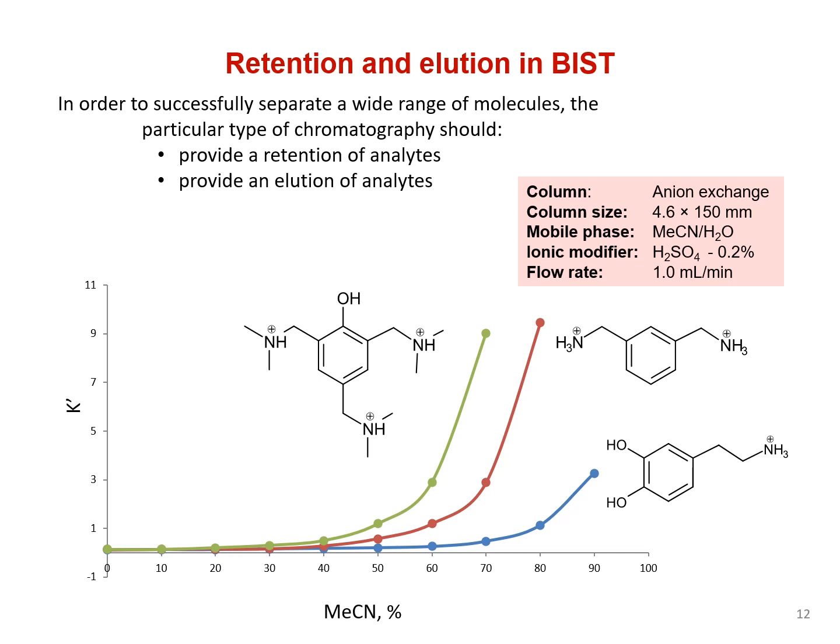Here we show exactly that. This type retention, or K-prime, depends on the number of charges on the analyte. Triple-charged 2,4,6-tris-dimethylaminomethylphenol in green has a higher K-prime than double-charged M-xylenediamine in red, which also has a higher K-prime than single-charged dopamine in blue, for any given mobile phase composition. As mentioned, we theorized that analytes with stronger charges would show longer retention since they are able to form more bridges, and that is shown quite conclusively in this experiment.